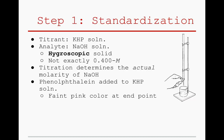Immediately, NaOH can be identified as the titrant. Since its mass can be measured and its molar mass calculated, it should be possible to create a solution of it that has an accurate molarity. Unfortunately, it isn't quite that simple. In reality, NaOH is a hygroscopic solid, meaning it absorbs impurities like water and carbon dioxide from the air. Therefore, the molarity of any NaOH solution will always be less than what it was meant to be. To determine its actual molarity, it is thus necessary to standardize it using a second titration.